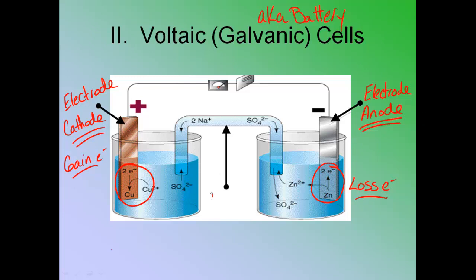This thing in the middle is what is called a salt bridge. Now chemists aren't very creative. So it's literally created from a salt, an ionic compound. And it's a bridge between the two cells in the galvanic cell. So you've got the left cell and the right cell and the salt bridge is what bridges the two sides.